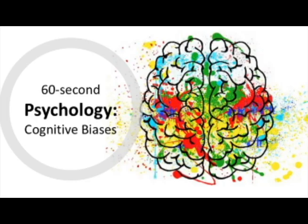One type of cognitive bias is fundamental attribution error. This influences the way we interpret the behaviour of others by attributing behaviour to their personal characteristics rather than recognising the wider situation or circumstances. For example, if someone is late to work, through fundamental attribution error a boss might blame the employee as lazy and irresponsible rather than recognising the wider factors that cause them to be late, such as the bus breaking down.